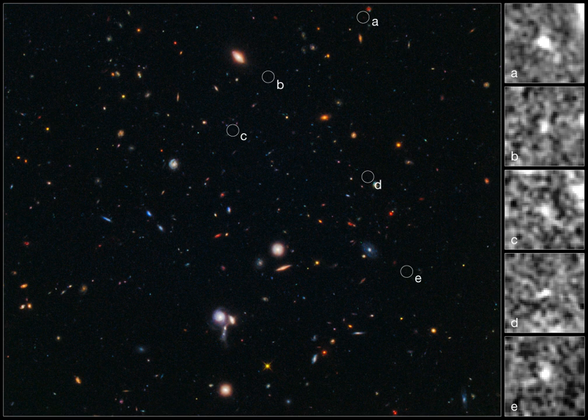A galaxy cluster, or cluster of galaxies, is a structure that consists of anywhere from hundreds to thousands of galaxies that are bound together by gravity, with typical masses ranging from 10^14 to 10^15 solar masses. They are the largest known gravitationally bound structures in the universe and were believed to be the largest known structures in the universe until the 1980s, when superclusters were discovered.